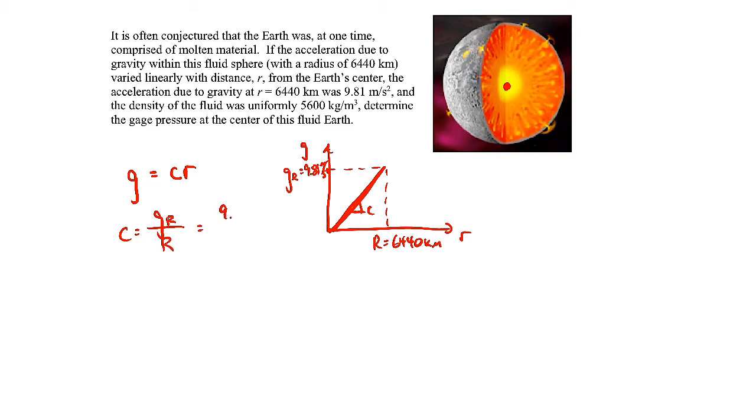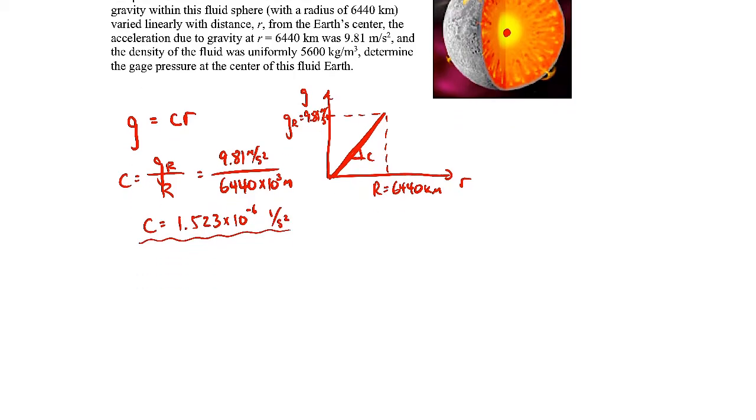So it's 9.81 meters per second squared divided by 6440 times 10 to the 3 meters. I just converted from kilometers to meters. And when you plug in those numbers, C comes out to be 1.523 times 10 to the minus 6th, 1 over second squared. So that's how gravity varies with the radius.